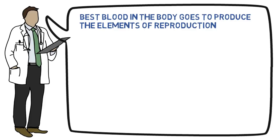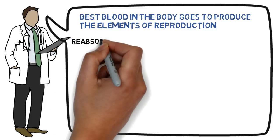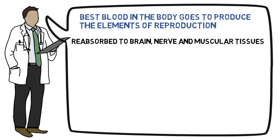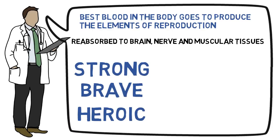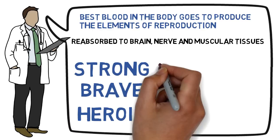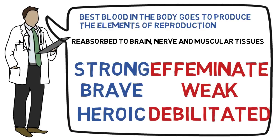It goes back into circulation ready to form the finest brain, nerve and muscular tissues. This vital fluid of man carried back and diffused through his system makes him manly, strong, brave and heroic. If wasted, it leaves him effeminate, weak and physically debilitated.